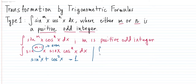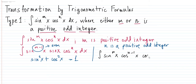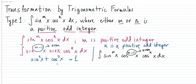The same thing will happen if n is a positive odd integer. In that case, we write sin raised to m times x, cosine raised to n minus 1 times x, cosine x, differential x. By subtracting 1, this will become a positive even integer, and we again introduce this trigonometric formula.